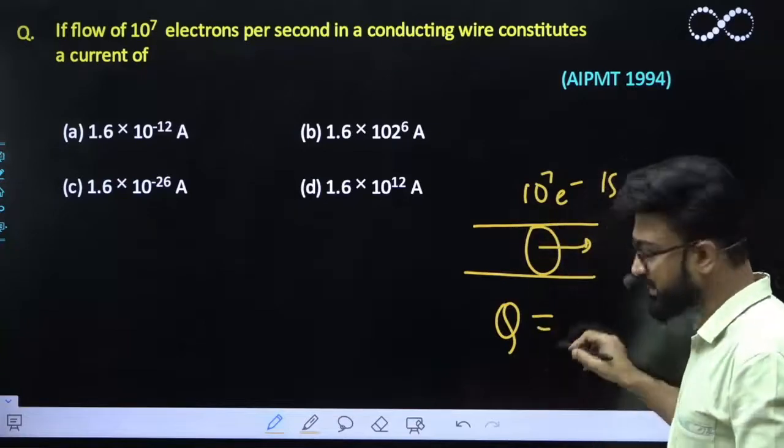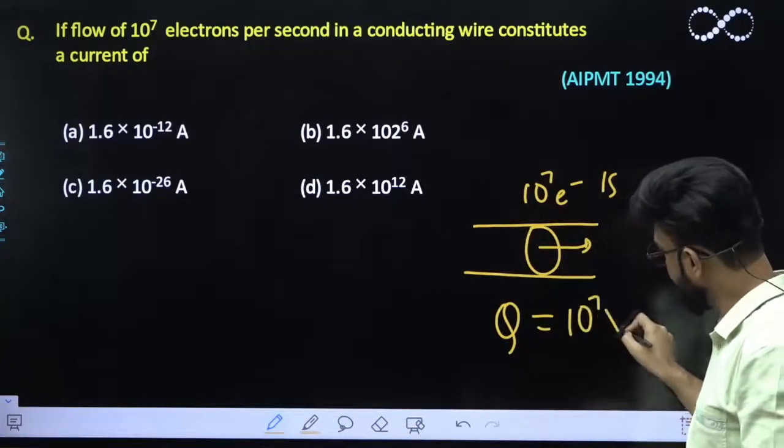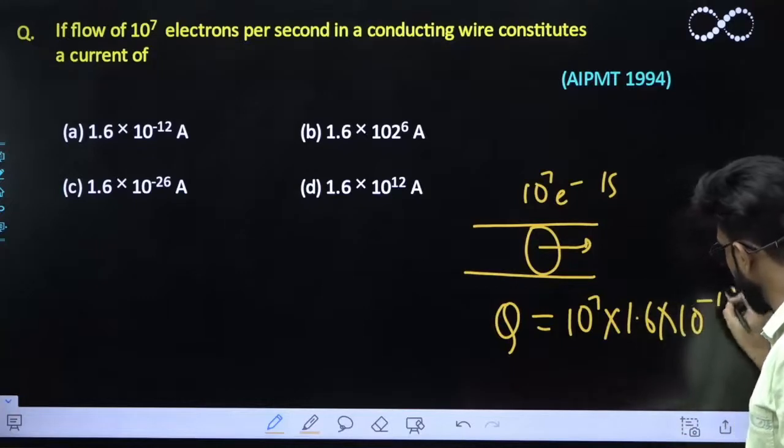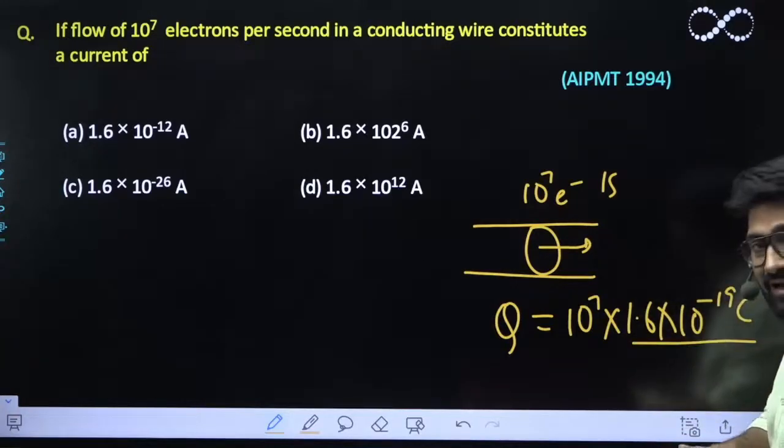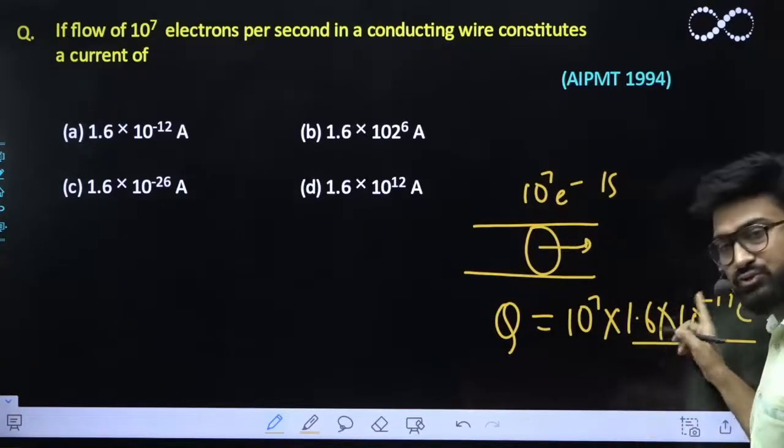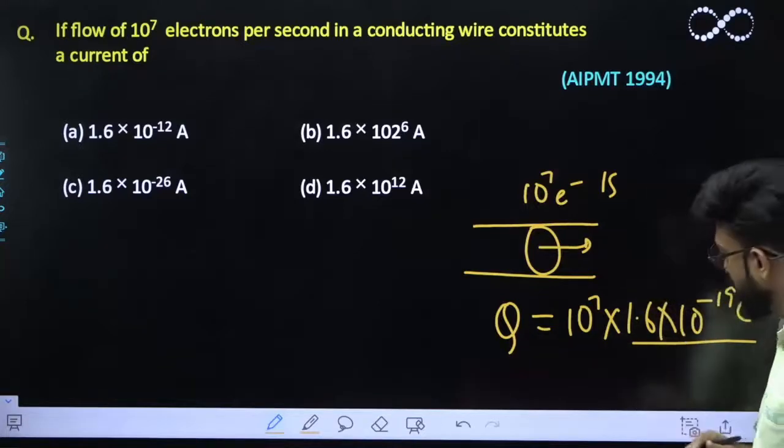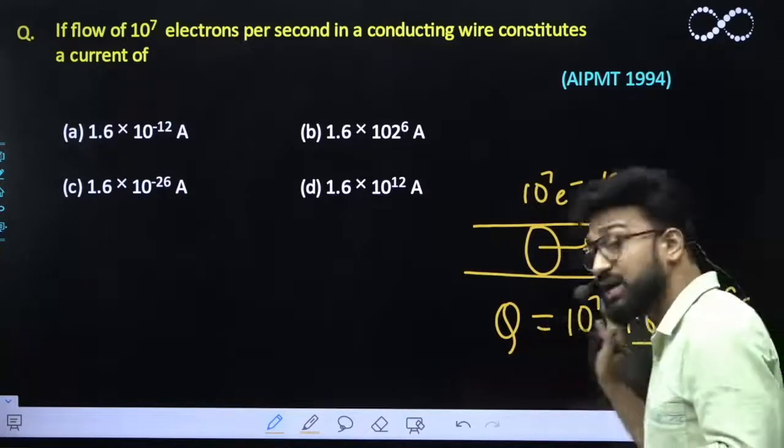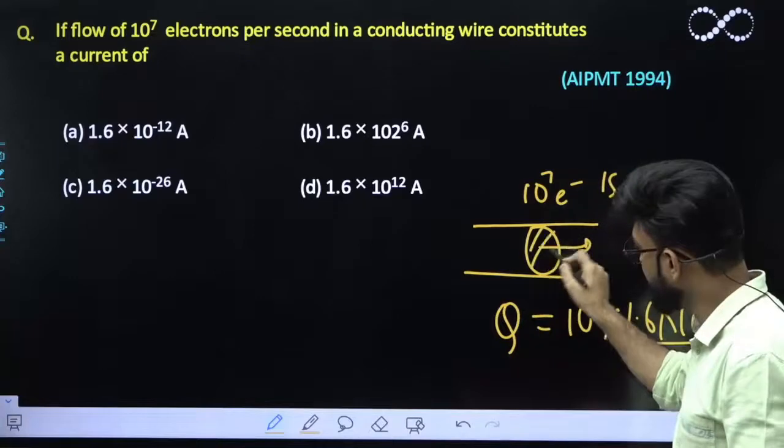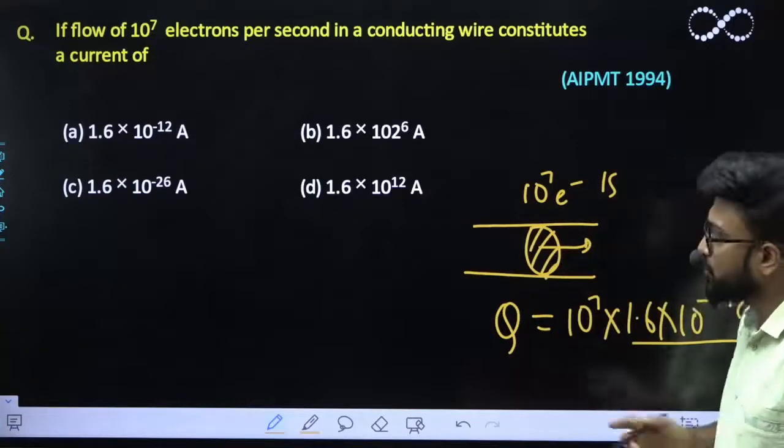...of this electron would be equal to 10 raise to power 7 into 1.6 into 10 raise to power minus 19 coulomb, because one electron constitutes a charge of 1.6 into 10 raise to power minus 19 coulomb. So that means this much of charge will flow through this cross-sectional area in one second.